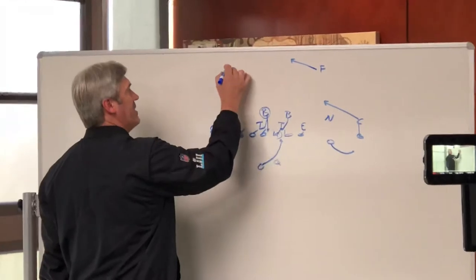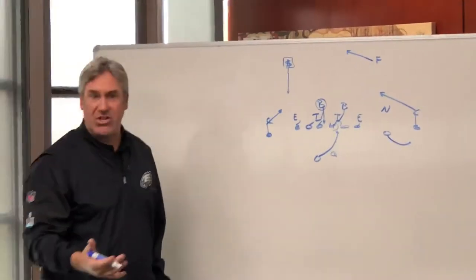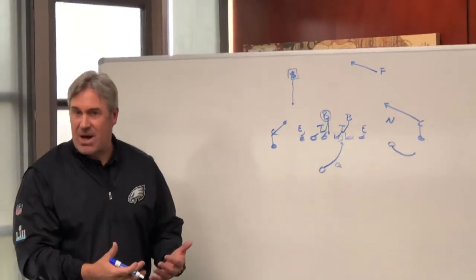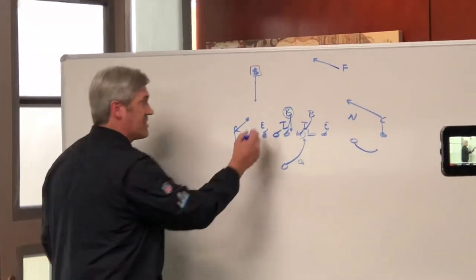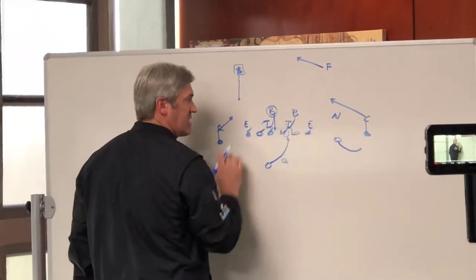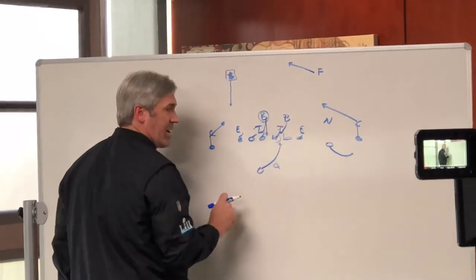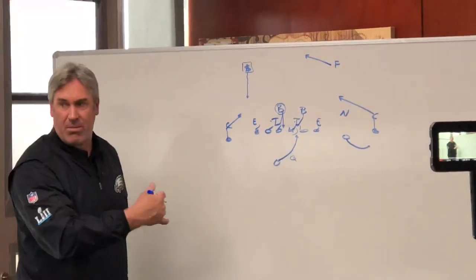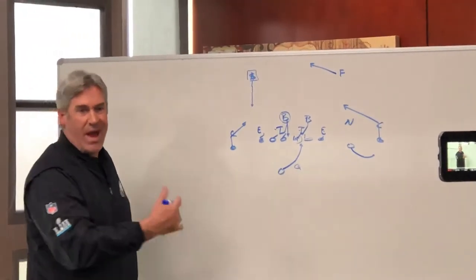So now the quarterback has to read this guy and make a determination. Is it a seven-man box or is it still a six-man box? If it stays a six-man box—six guys, four down linemen, two linebackers—then it becomes a give. Quarterback will give it all that. Just hat for hat and let's go.